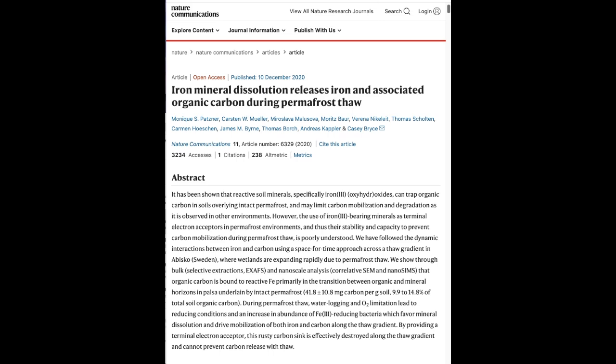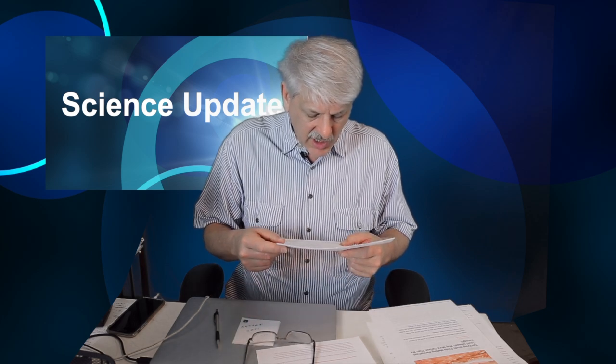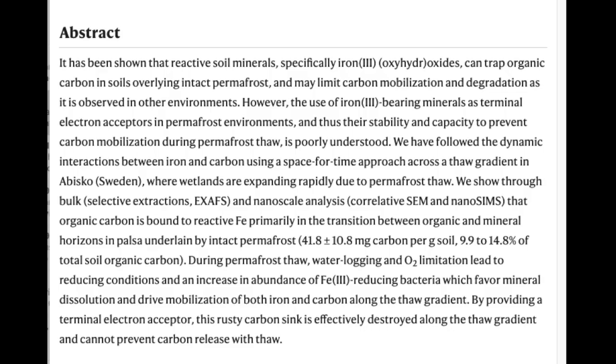And the bottom line in the abstract reads, by providing a terminal electron acceptor, this rusty carbon sink is effectively destroyed along the thaw gradient and cannot prevent carbon release with thaw. So what used to be believed to be a key component holding on to carbon so that it could not be released into the atmosphere, it turns out doesn't work that way at all. So the carbon is being released. That's an important fact.